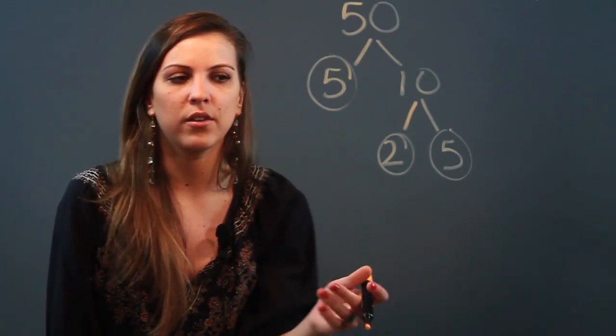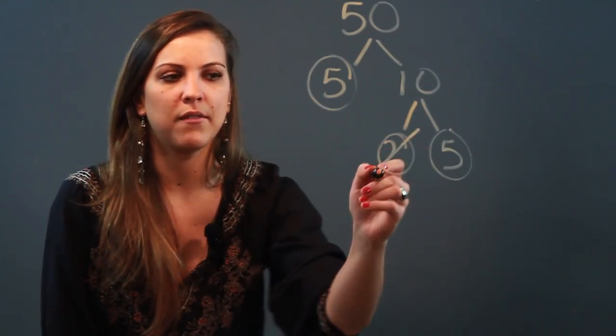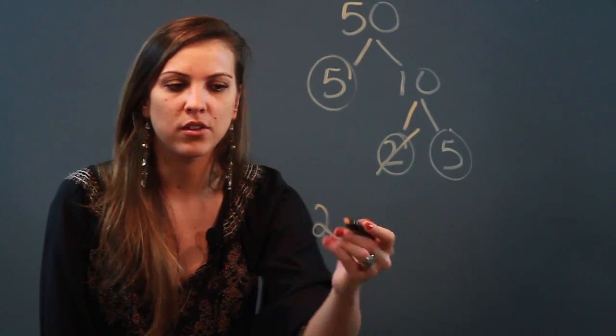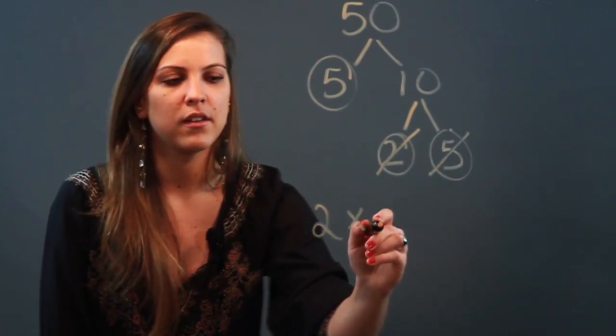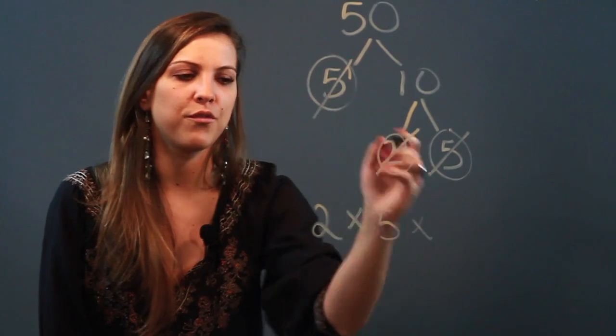And now what I do is in order from least to greatest, I'm going to start writing the numbers down. So I have a 2, and since they're factors, it means we're multiplying them times 5 times another 5.